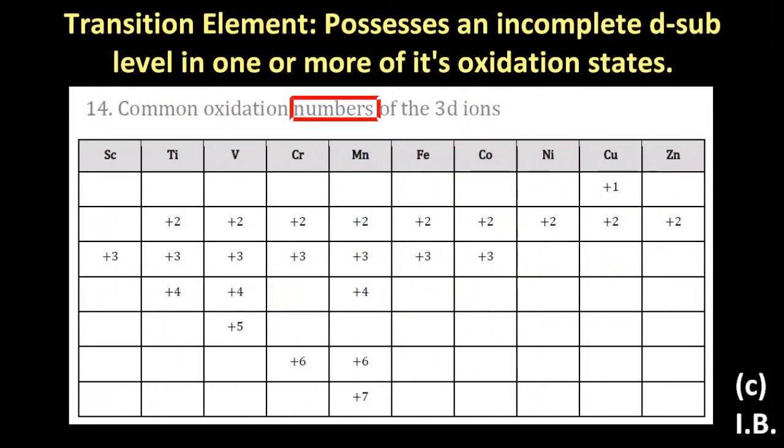Okay. So in the data booklet, they say these are oxidation numbers. No, no. The oxidation numbers, according to the IB, are Roman numerals. These are oxidation states. So a transition element possesses an incomplete d sublevel in one or more of its oxidation states.